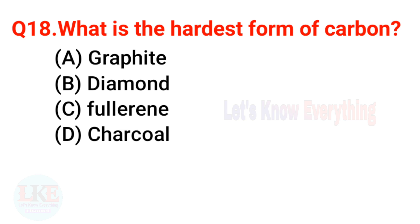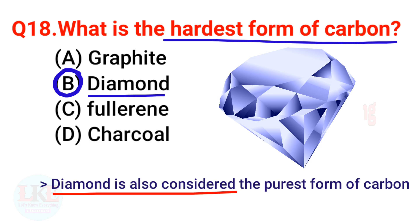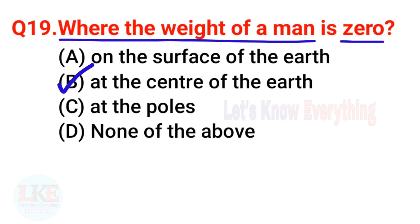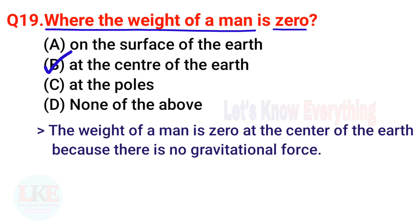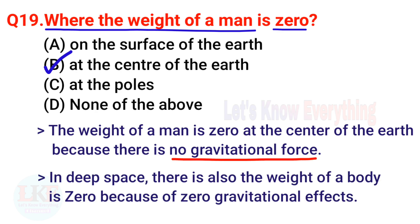Question 18: What is the hardest form of carbon? The right answer is option B — diamond. Diamond is also considered the purest form of carbon. Question 19: Where is the weight of a man zero? Options: A) Surface of the earth, B) Center of the earth, C) At the poles, D) None of the above. The right answer is option B — at the center of the earth, because there is no gravitational force. In deep space, the weight of a body is also zero due to zero gravitational effects.